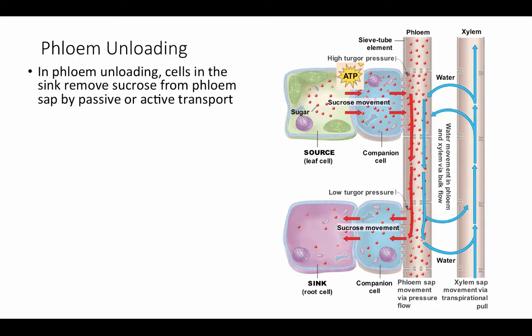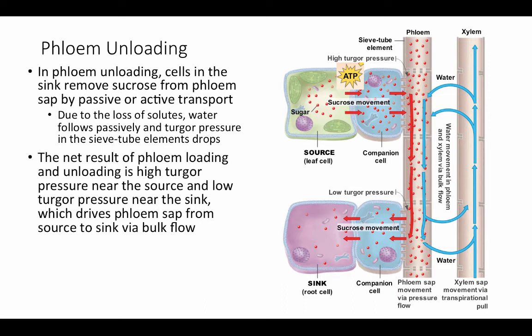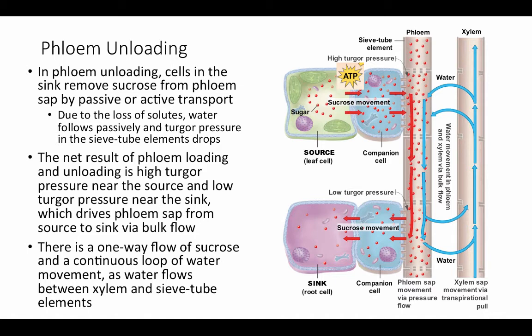In phloem unloading, cells in the sink remove sucrose from the phloem sap by passive or active transport depending on the type of sink. Due to the loss of solutes, water follows passively and turgor pressure in the sieve tube elements drops. Water follows those sucrose molecules out, and turgor pressure decreases as water flows not just into the sink cells but also into the xylem due to the negative pressure in nearby xylem vessels. The net result is high turgor pressure near the source and low near the sink, driving phloem sap under positive pressure.